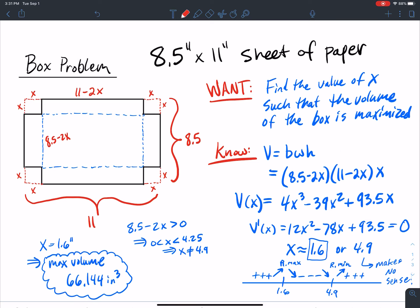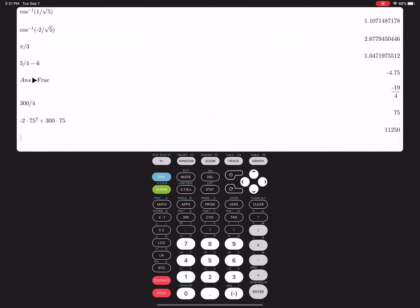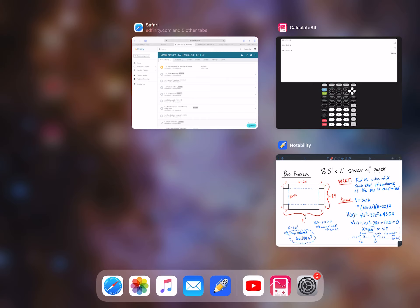If I wanted to, I could actually do this in my calculator. So 8.5 - 2(1.6), that gets me 5.3, and I have 11 - 2(1.6), and that gets me 7.8. So I have 1.6 × 5.3 × 7.8, and that gets me the 66.144 inches cubed that I desired.